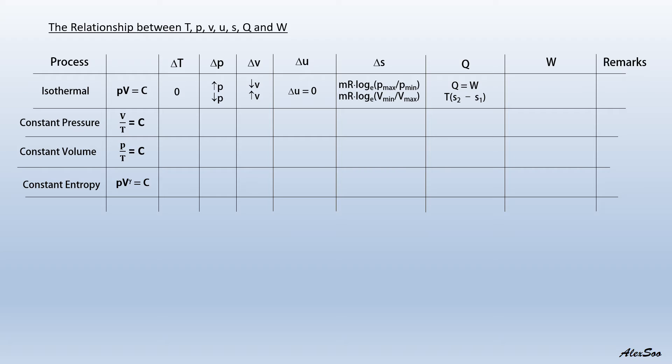You can also write heat as T times (S2 minus S1), where Q equals W. This T(S2 − S1) can be obtained by the area under the process path of a TS diagram under the isothermal condition, which also represents the work done. For isothermal, we refer to both Boyle's law and Joule's law.